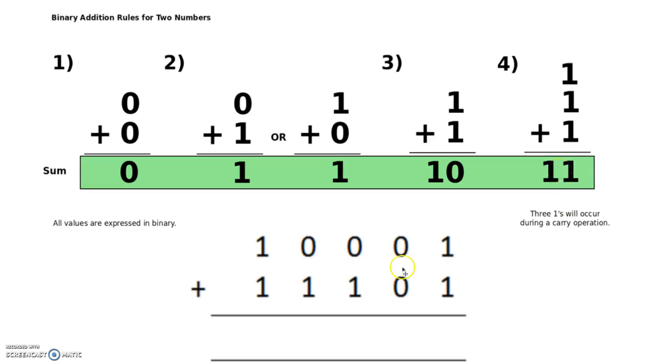So if we have a look at this binary sum down the bottom here, first of all we've got one and one, so we're using this rule here, rule number three. Very simply, one and one is one zero, so we're going to put the zero in here like so.